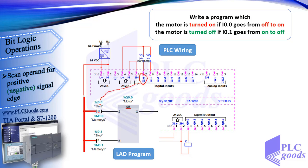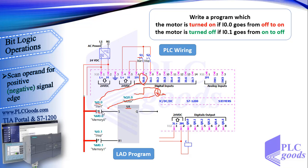I0.0 is connected to the start pushbutton. When the pushbutton is in its normal condition, I0.0 is 0. If I press it, I0.0 changes from 0 to 1. Then if I release the start pushbutton, I0.0 state changes from 1 to 0. The used instruction then generates a pulse for just one program cycle.